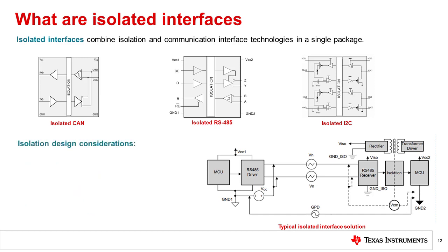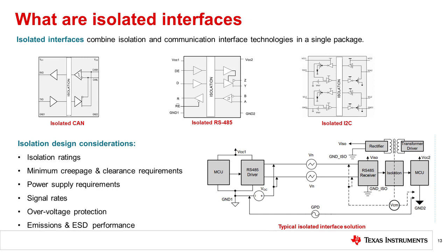When determining the best isolated solution for your design, there are some basic aspects of device selection beyond choosing the right communication interface to consider. Isolation ratings, package options for minimum creepage and clearance requirements, primary and secondary power supply requirements, signal data rates, overvoltage protection, and emissions performance will all be standard design considerations to include in your selection process.